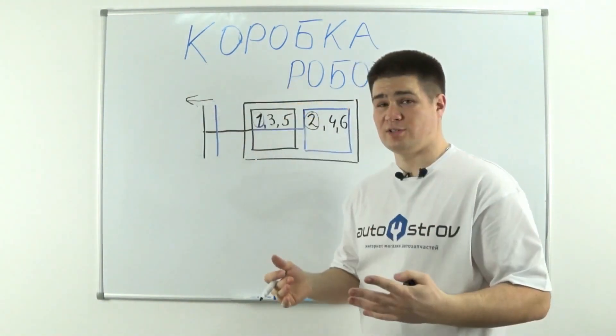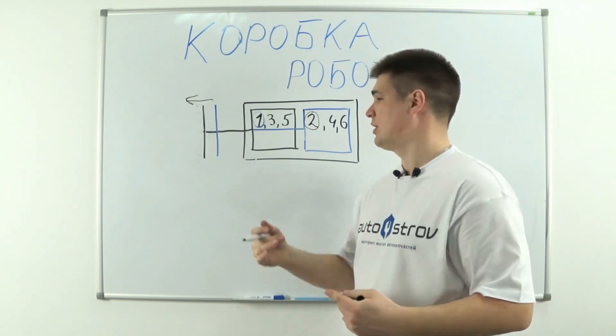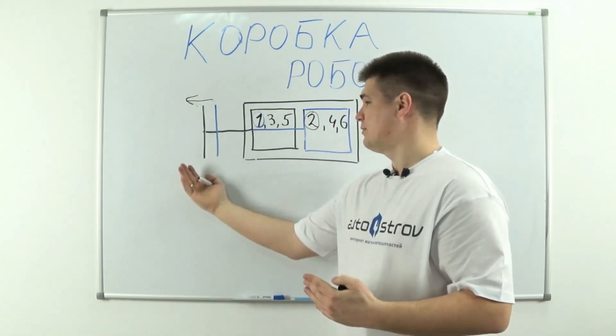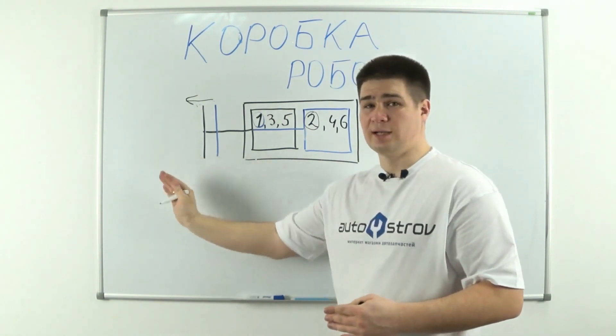Once again, at the moment of shifting into another gear, the DSG box simply switches the clutch. It disengages one clutch and engages the other.